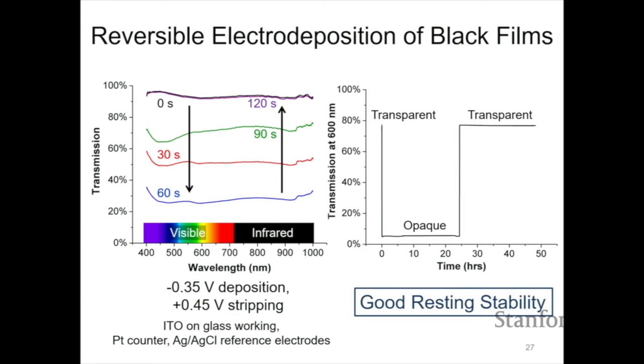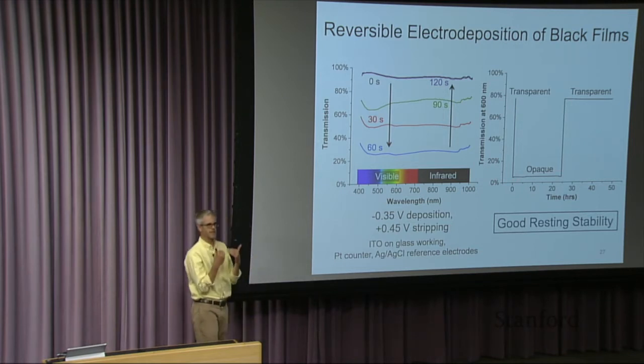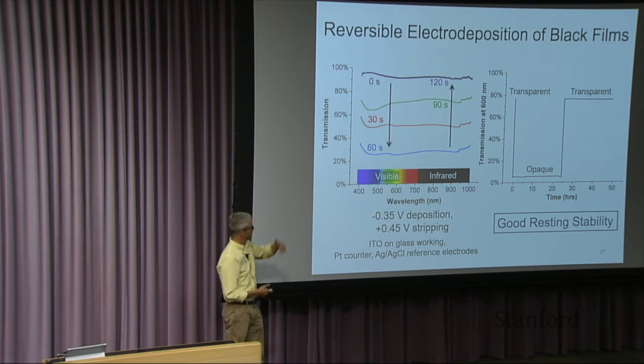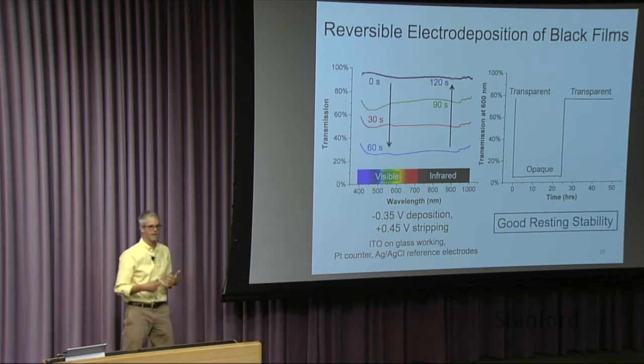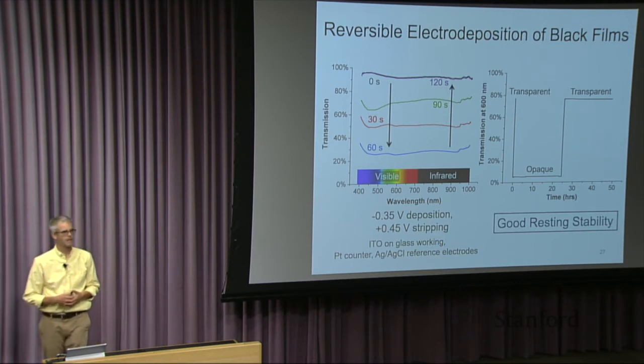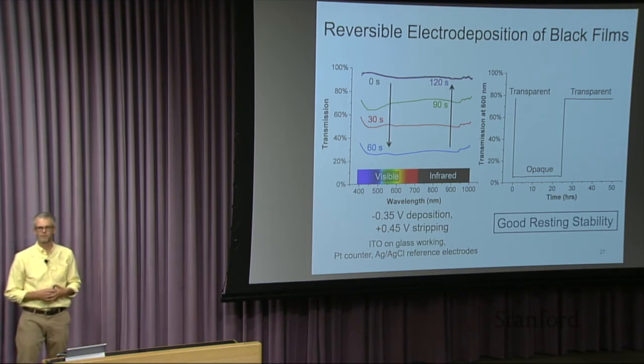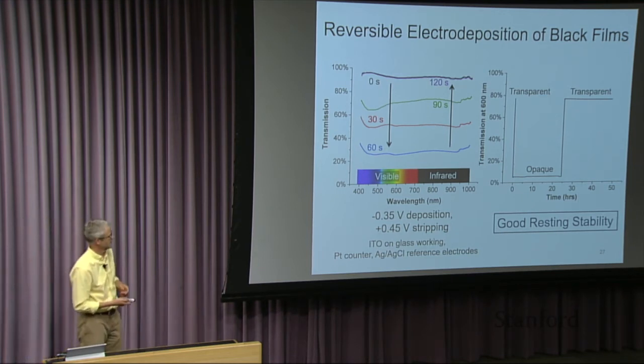Over here, you see what happens if we plate metal and then remove the power source. Nothing happens. The metal stays put. And then after a day we stripped it. And of course the metal ions will not just spontaneously plate on there. And so it draws no power unless you're actively switching the device. So it's a very low overall power consumption.